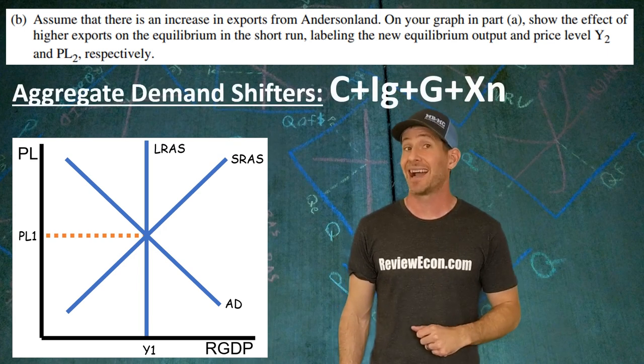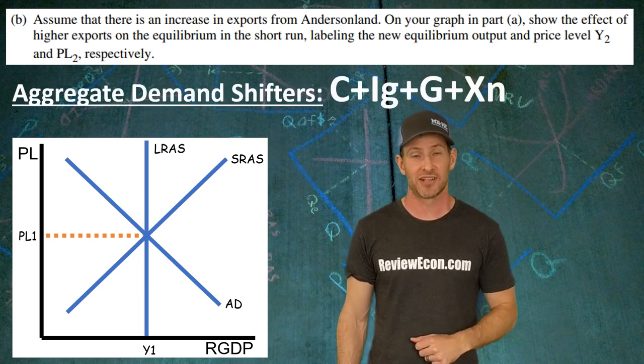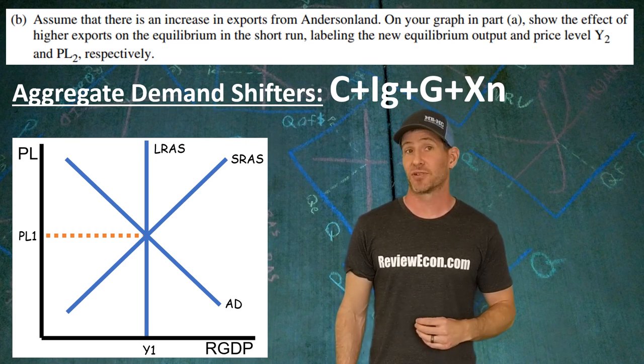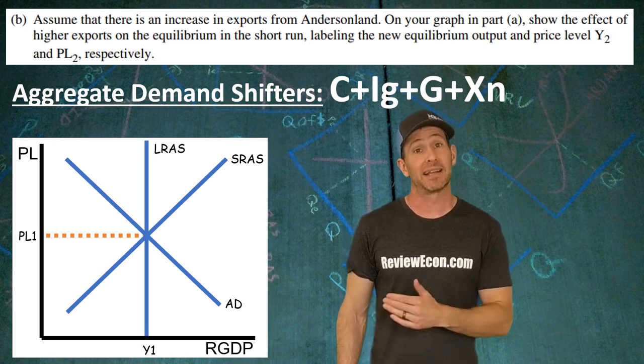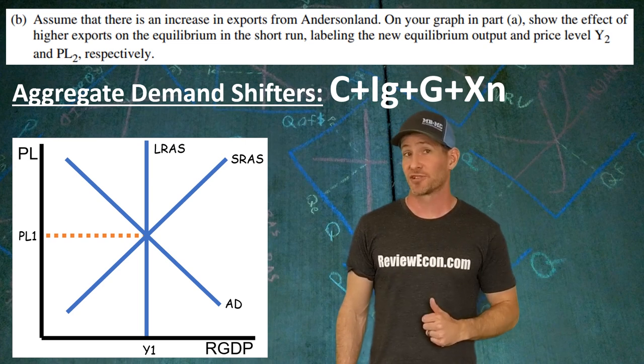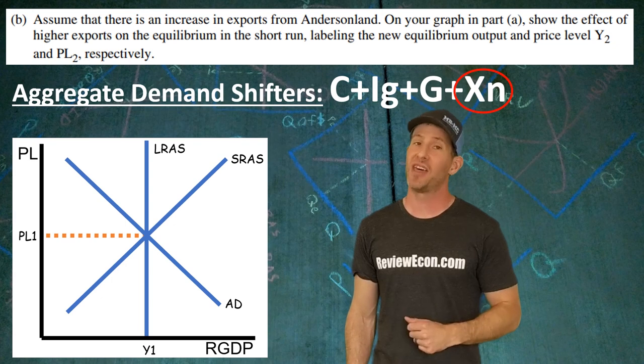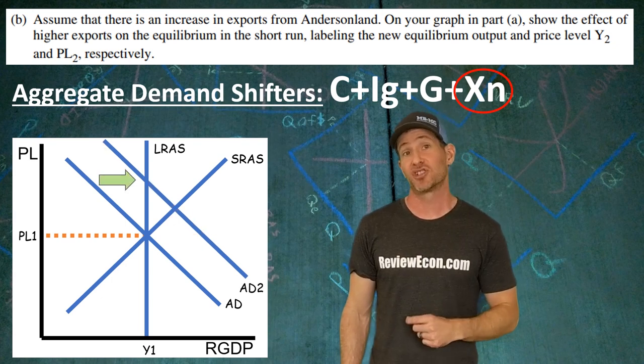C is consumption. IG is gross investment. G is government purchases. And XN is net exports, which is exports minus imports. Since exports are increasing, that is going to cause net exports to increase. And with that, we're going to see aggregate demand shift to the right.